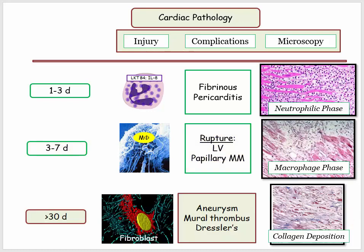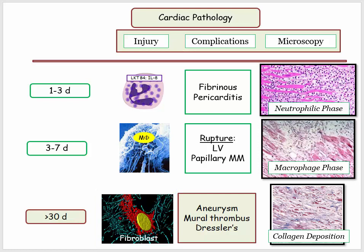Now we are ready to wind down. We're a month out, and predictably the fibroblast has arrived, synthesizing and depositing collagen. In this phase, the complications and derivatives will be related to LV aneurysm formation — a potential complication from a large transmural infarction of the anterior wall. Although not an invariable complication, on Step 1 it becomes a surrogate marker for this phase. The other complication beyond day 30 is Dressler syndrome, also referred to as autoimmune pericarditis.